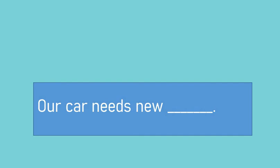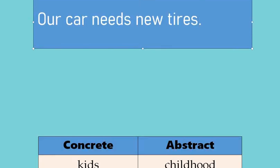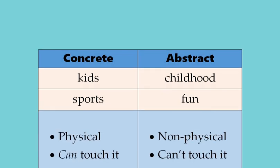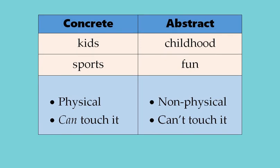One more: 'Our car needs new ___.' Does a concrete or abstract noun fit better? Our car needs new tires — probably something physical in there. So as a review: concrete and abstract nouns. Kids and sports are concrete nouns — physical things, real people, places, or things. Abstract nouns such as childhood and fun — they're real, but you can't touch them; they're non-physical. Remember the touch test — that's a great way to tell if something is concrete or abstract.